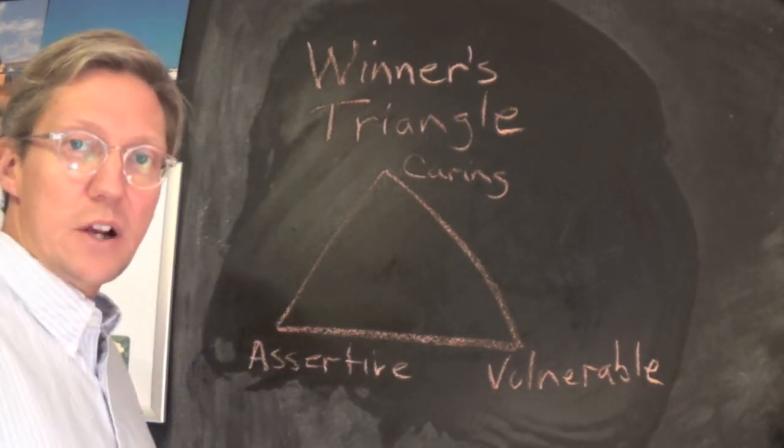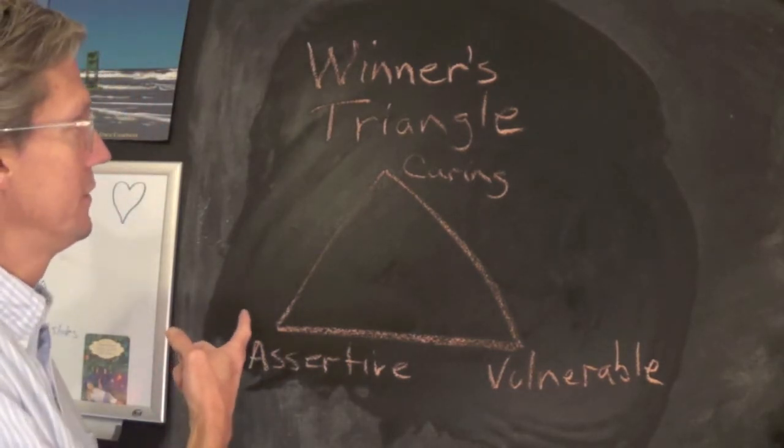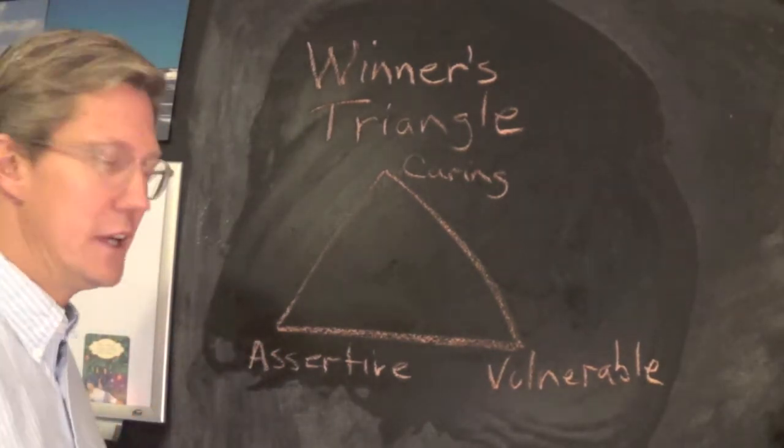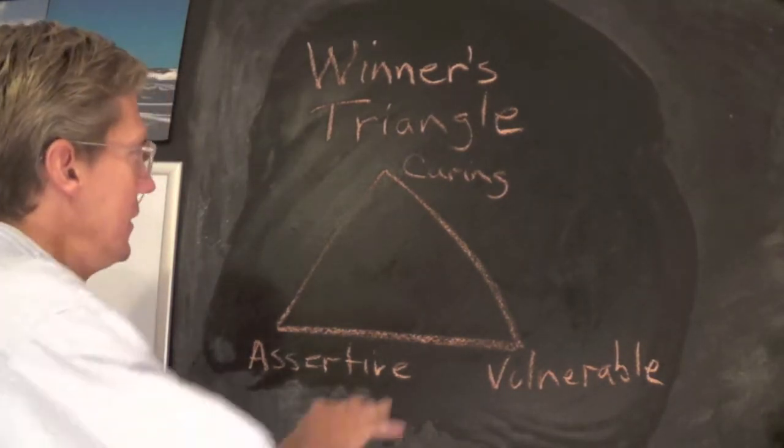In the previous video we talked about the Karpman drama triangle. I don't know who to give this credit to, but this is the winner's triangle. Essentially, when we are in a genuine relationship with others, these are three attributes that we are acting from.